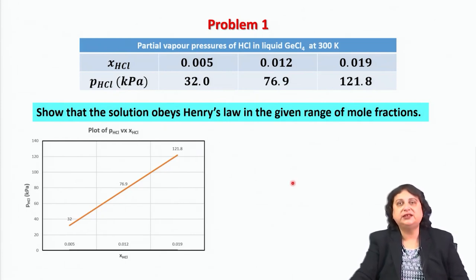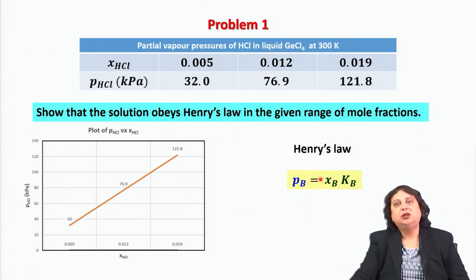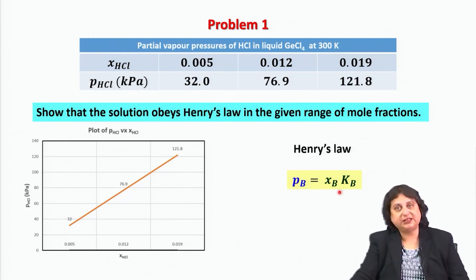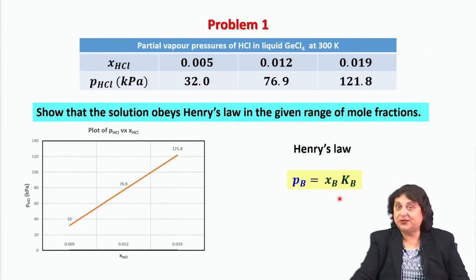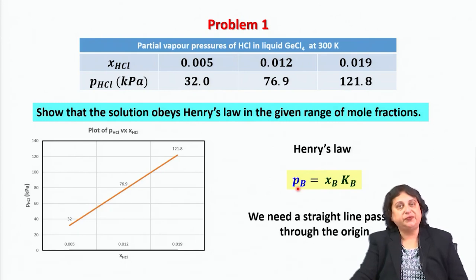Let us review Henry's law. Henry's law says that if I have a solution of b in a, then the partial vapor pressure of b is proportional to the mole fraction x_b, and k_b is the Henry's law constant. This equation immediately tells me that if I plot p_b as a function of x_b, I must have a straight line that passes through the origin. So from the data I can show that p_b values are linear in x_b and pass through the origin, confirming Henry's law.